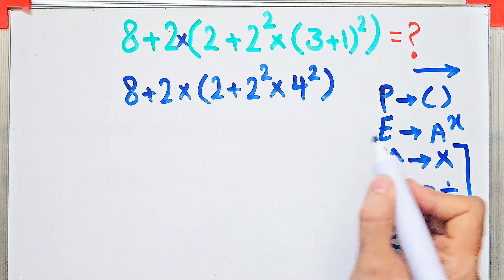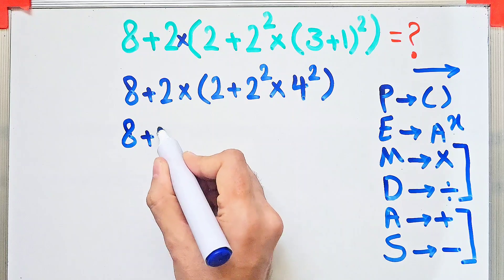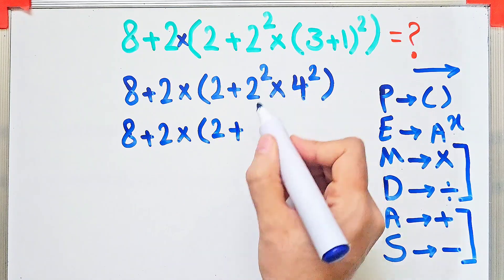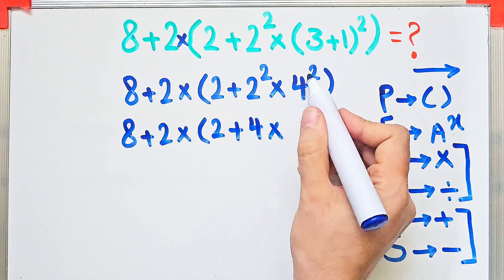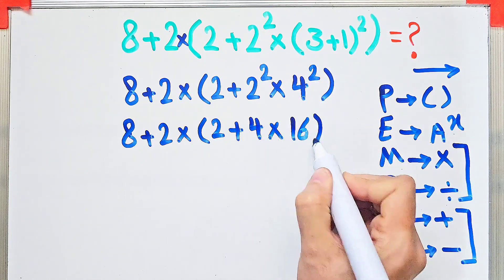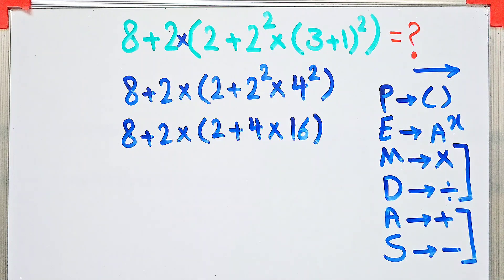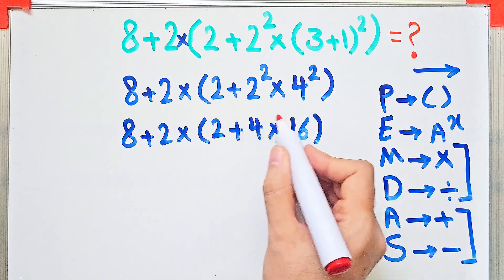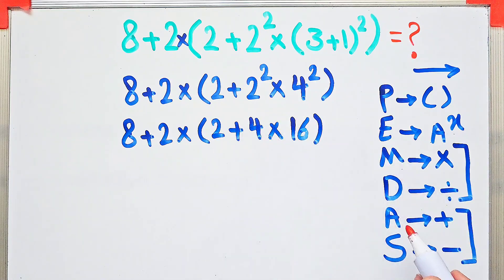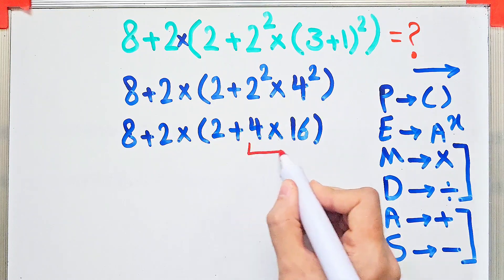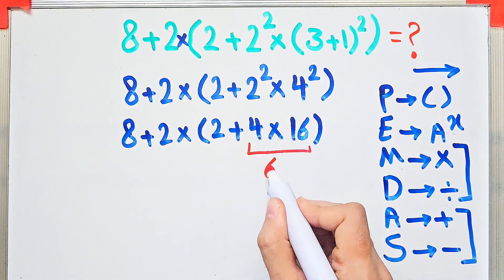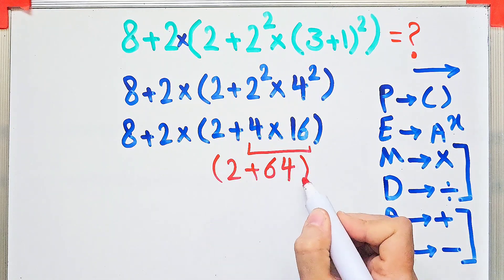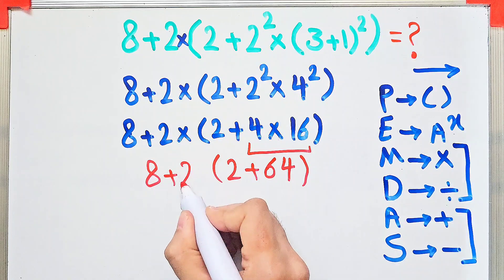First we simplify the exponent: 8 plus 2, then times open parenthesis 2 plus 2 to the power of 2 which equals 4, then times 4 to the power of 2 which equals 16. Again we simplify the parentheses. Inside the parentheses we have addition and multiplication. First we do the multiplication because multiplication has higher priority than addition: 4 times 16 equals 64.